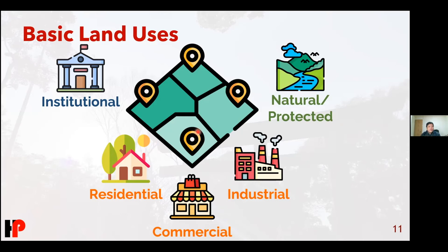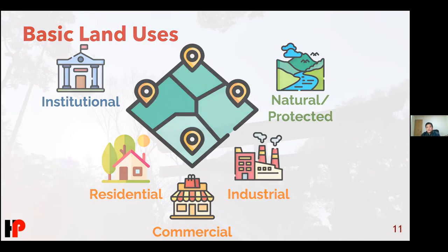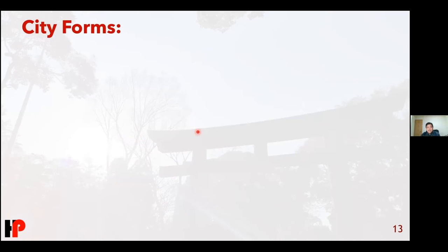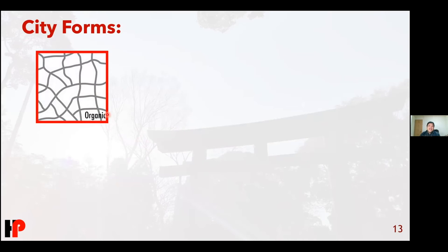Our webinar today is entitled From Form to Function, so I will show you first the form of a city. Cities usually grow around roads — it doesn't have to be a concrete road, it can be a walking path or a horse path in older cities. Some cities develop what we call organically, meaning naturally. One person is living here, their business is there, and through continuous walking and horse riding, a road develops. Then another part develops — they didn't want to buy the land for a direct line, so they had to go around it. That's organic growth: it goes naturally, it wasn't planned.